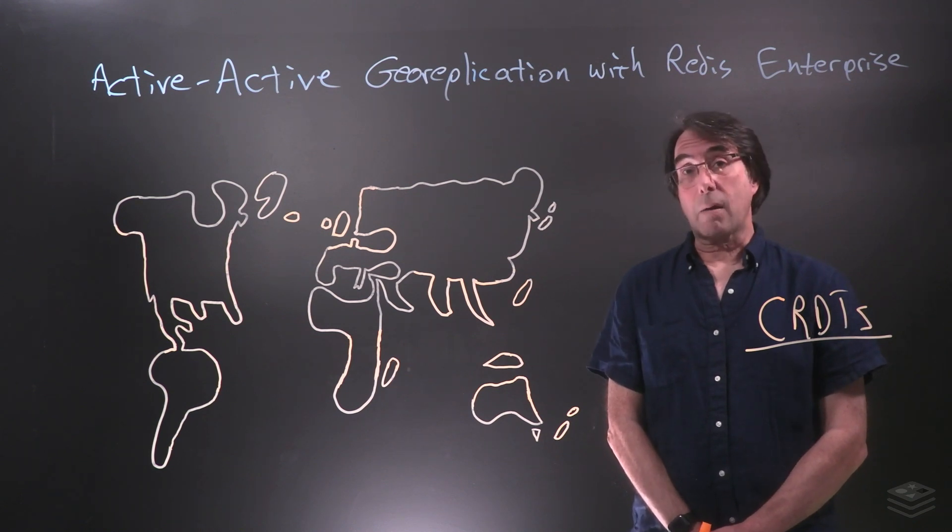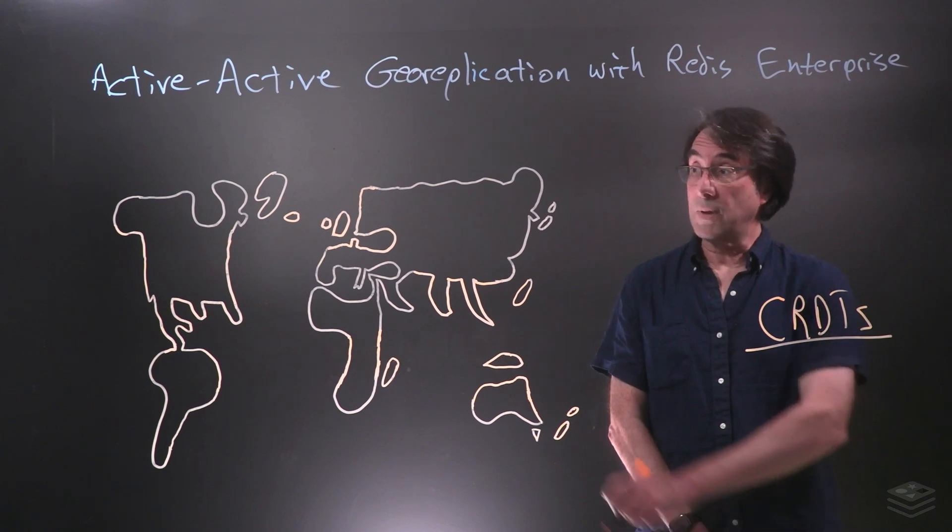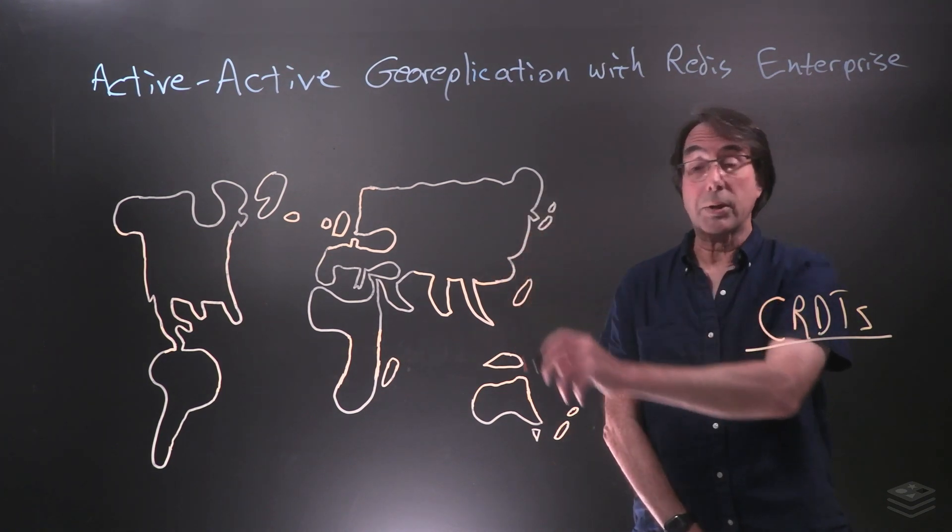For our purposes here, we'll simply say that CRDTs define very precise rules for how changes should be replicated and resolved. For our discussion here, we'll assume we have a database with replicas in San Francisco, London, and Sydney.